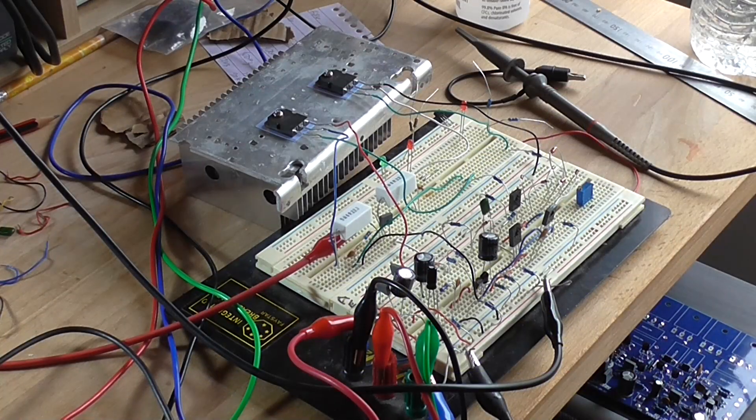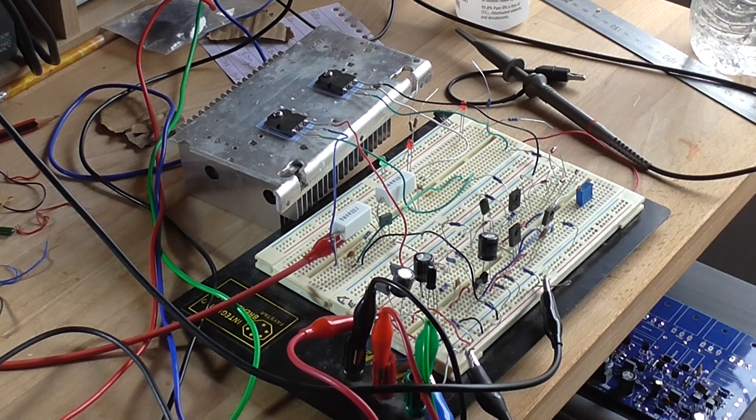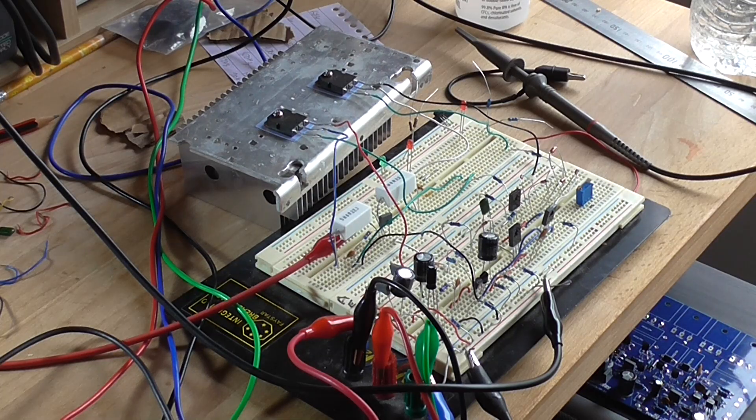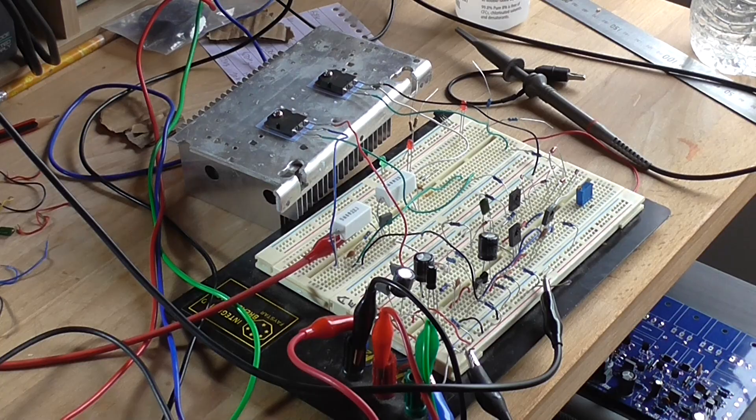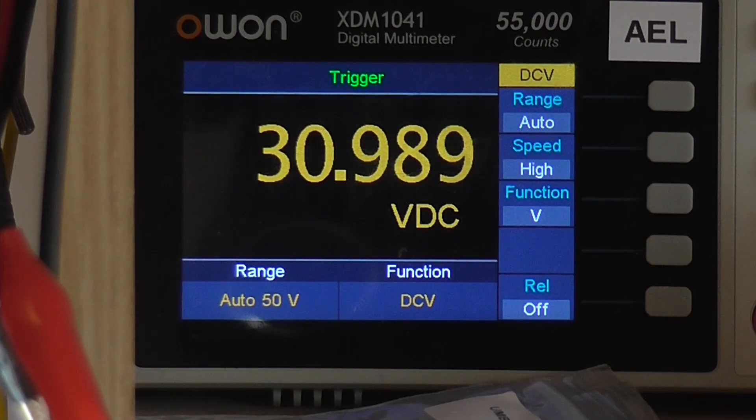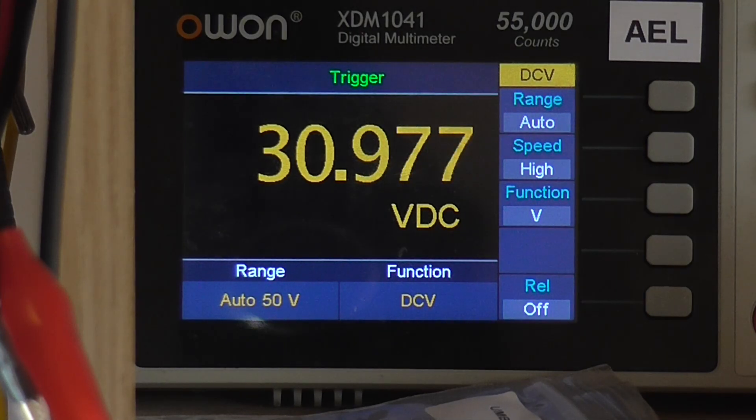Well there it is all breadboarded there, ignore that potentiometer here that's not doing anything I was just trying to test something else. Now the circuit is powered up however it does not work. My power supply is set to roughly 31 plus minus volts and we've got 30 volt DC on the output.